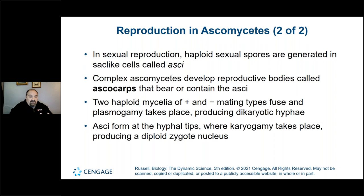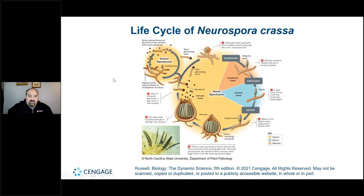Sexual reproduction allows for genetic diversity within the species, while asexual reproduction allows the actual spores to be released into the environment to produce more fungi. Sexual reproduction is not producing spores that go out into the environment — it's the asexual reproduction that releases spores into the air or water, carrying them to an area where they can germinate and produce new fungi.